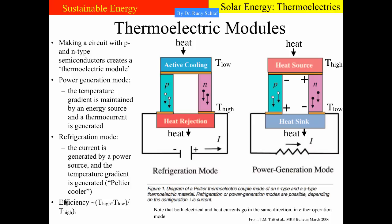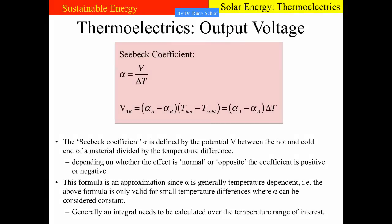It should be pointed out that the efficiency in the power generation mode depends, like in all heat engines, on the difference between the temperatures at the hot and the cold end. The Seebeck coefficient can be calculated by dividing the voltage across the material by the temperature difference between the ends. Once we have the Seebeck coefficient, we can calculate the output voltage. If we have two materials in contact, we subtract the Seebeck coefficients and multiply by the temperature difference to get the voltage.